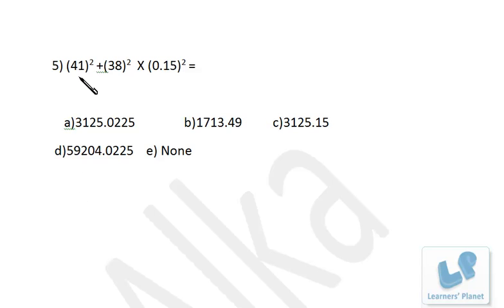Now once again, a problem based on calculation: 41 square plus 38 square into this figure. See, 41 square—that's 1681. Quickly you can calculate that.